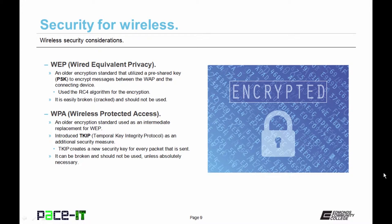Let's talk about encryption, beginning with WEP — Wired Equivalent Privacy. It's an older encryption standard that utilizes a pre-shared key to encrypt messages between the wireless access point and connecting devices. WEP used the RC4 algorithm for encryption. It is easily broken and should not be used — it can take an attacker just minutes to crack a WEP-encrypted network.